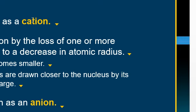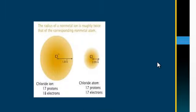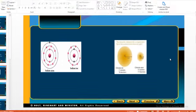So what is a cation? A positive ion. And what is an anion? A negative ion. Now we'll compare the radius of the positive ion to its original atom, and the radius of the negative ion to its original atom.